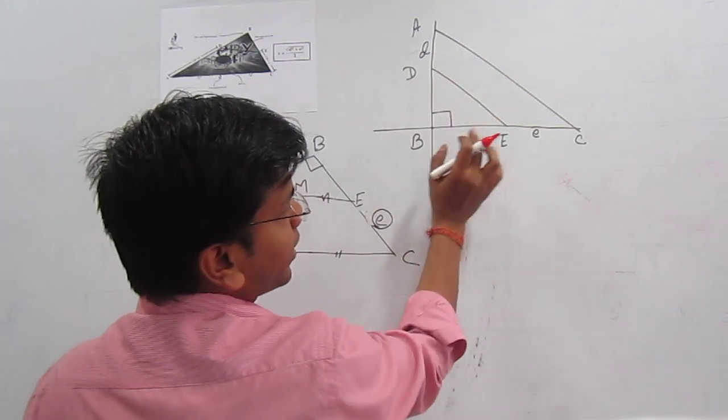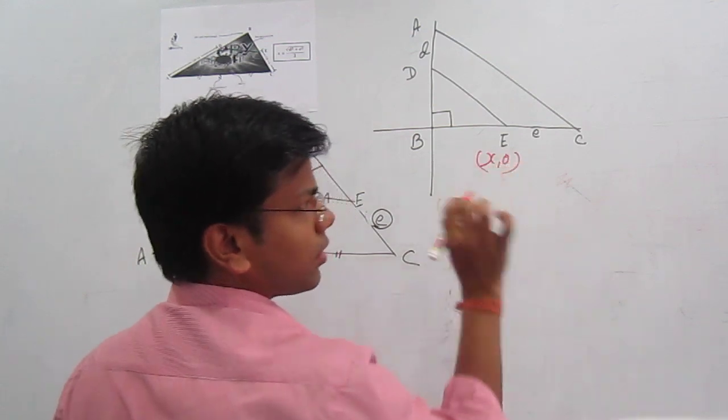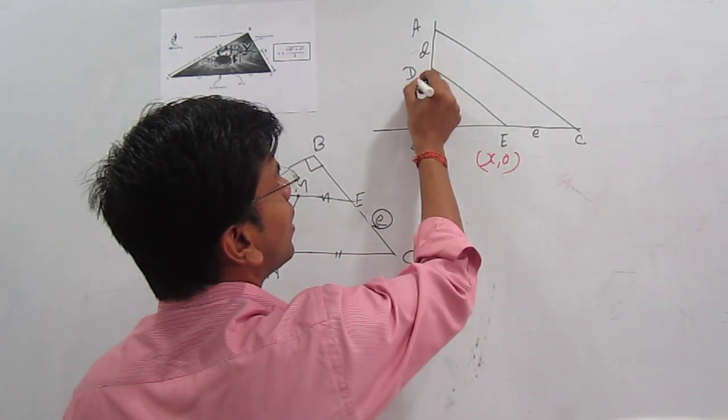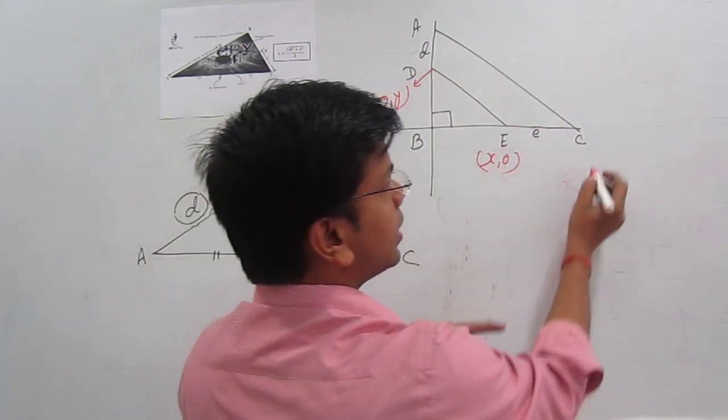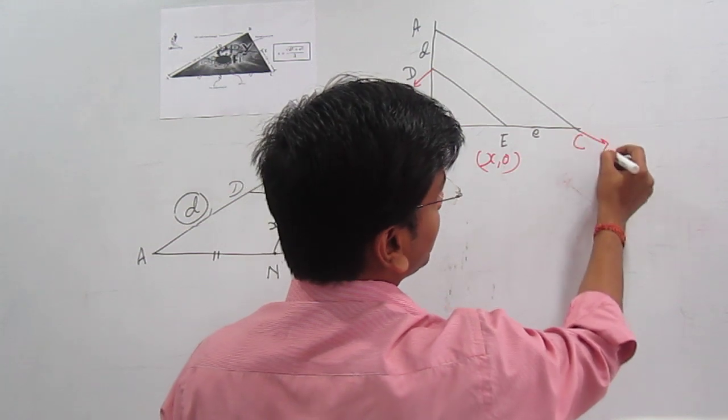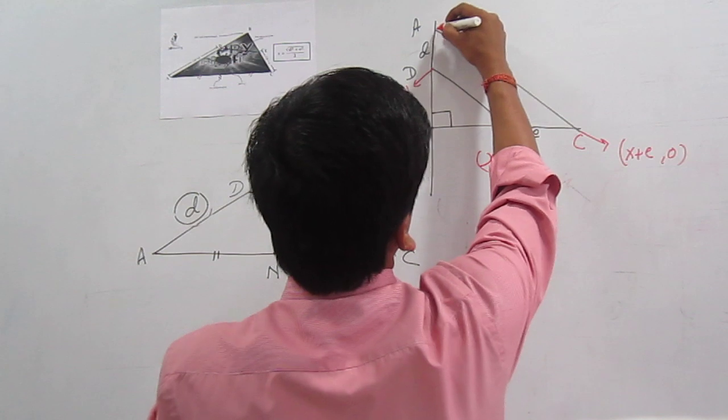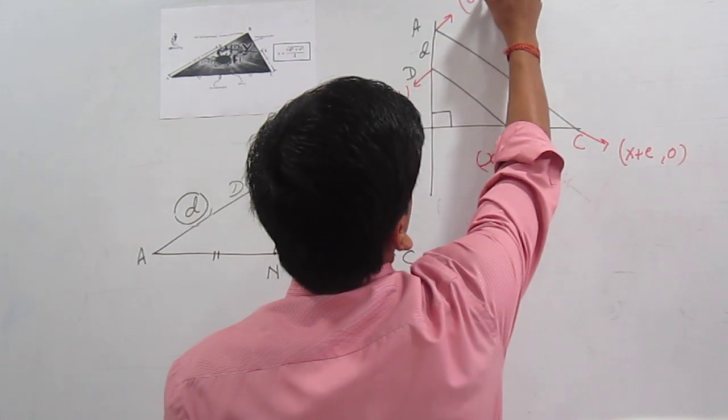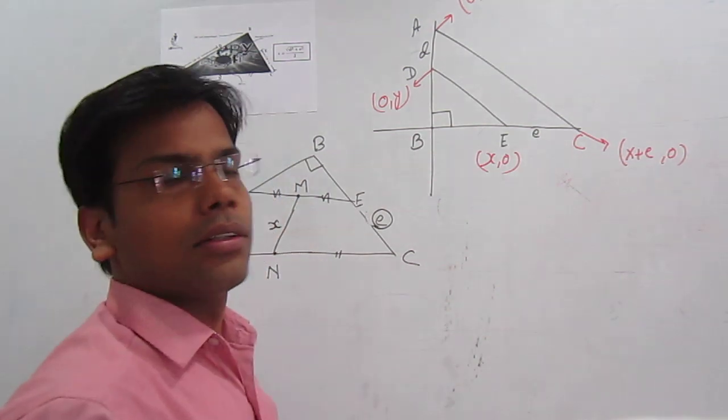Assume, start with a smaller triangle. We have two right-angled triangles. This point is X and 0. This is 0 and Y. Distance is E. So the point C is nothing but X plus E comma 0. This point D is 0 comma Y plus D. I think that is a perfect point.